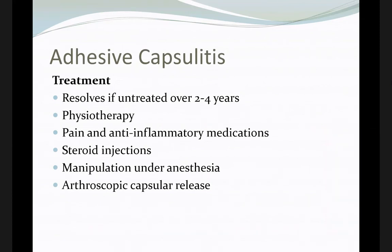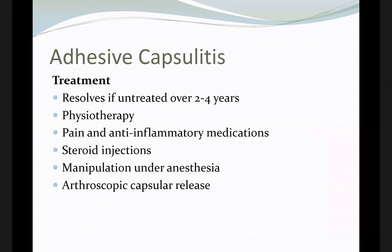The stages are: first, the freezing stage — continuous pain from inflammation in the capsule; then the frozen stage — significant stiffness and decreased range of motion with less pain; and finally the thawing (resolution) stage where range of motion gradually returns. Risk factors include diabetes (especially insulin-dependent, type 1), hypo- and hyperthyroidism, post-surgery or trauma, and high cholesterol.